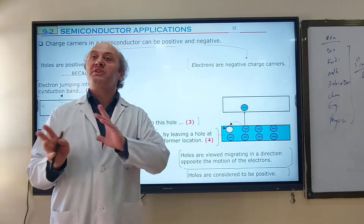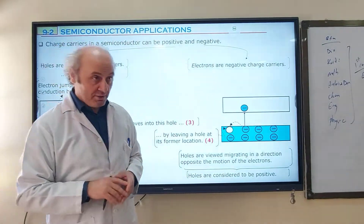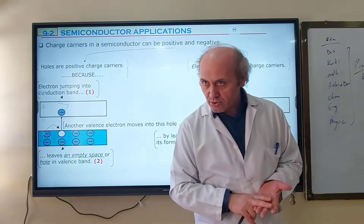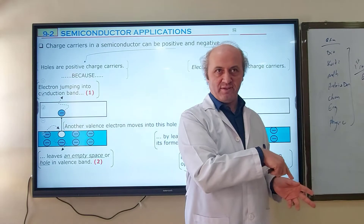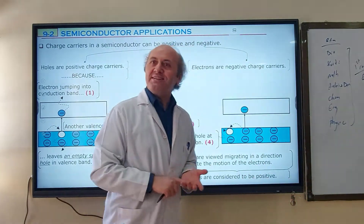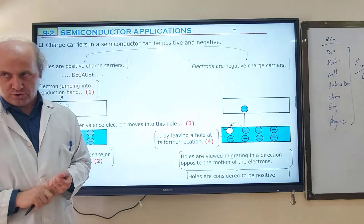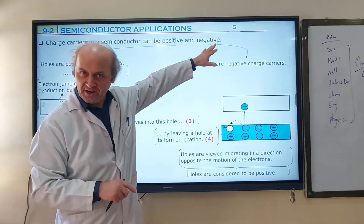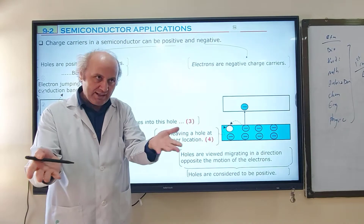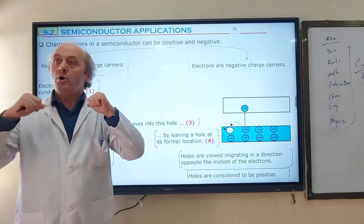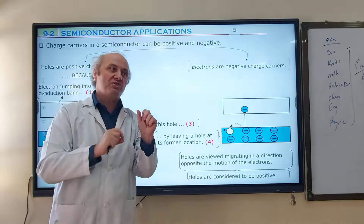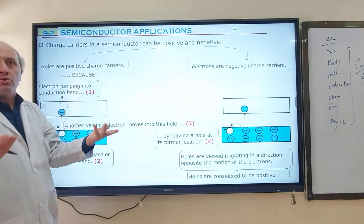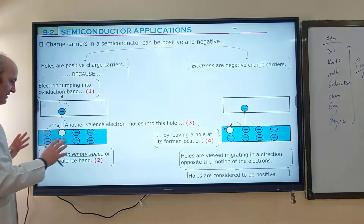But in semiconductors, this is a little different. In semiconductors, charge carriers can be both negative — that is, electrons — and also positive. Positive charge carriers are called holes. The charge carriers in a semiconductor can be both positive and negative. But what is a hole? What does hole mean? Let's see that.